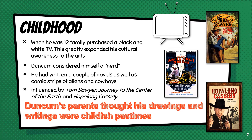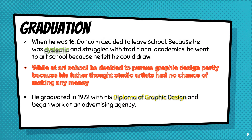Duncan's parents thought his drawings and writings were childish pastimes, and his mother would humiliate him, and his father dismissed his writings as frivolous pursuits. When he was 16, Duncan decided to leave school. Because he was dyslexic and struggled with traditional academics, he went to art school because he felt he could draw.